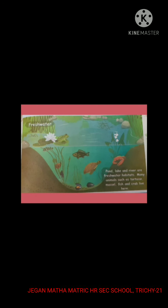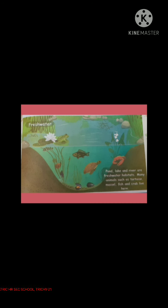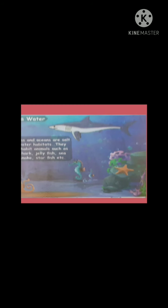Next, we learn about water and aquatic habitats. Animals that live in water are called aquatic animals — for example, fish, dolphin, and crab. Water habitat is divided into two types: fresh water and sea water, or marine water. Pond, lake, and river are freshwater habitats where animals such as tortoise, fish, and frogs live. Seas and oceans are saltwater habitats inhabited by animals such as shark, jellyfish, sea snake, starfish, etc.